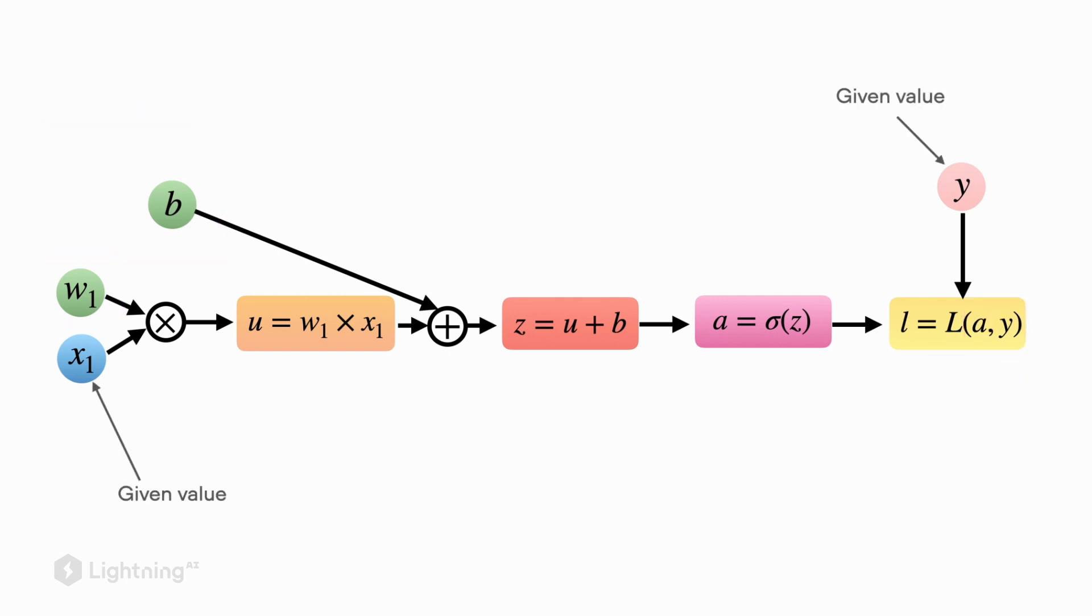x1, on the other hand, is given to us. It's determined by the input feature of the training example. And so is y. y is the class label here. So both x1 and y are given, and w1 and b are the ones that we want to update.